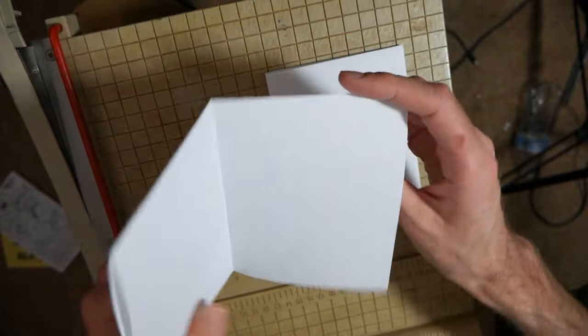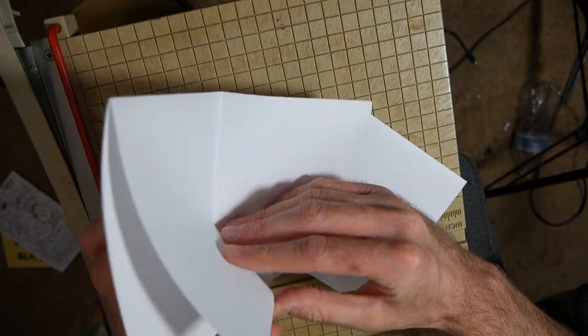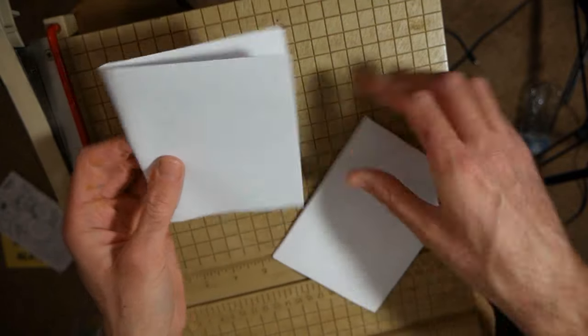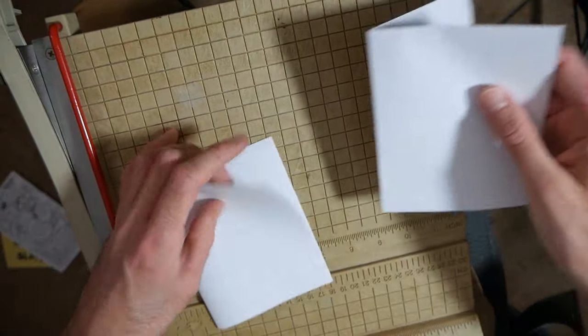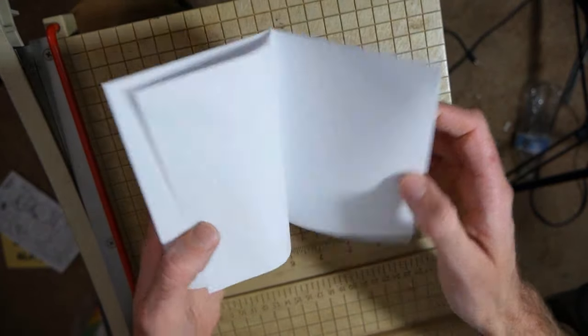Alright so now we've got two of these guys. What you're gonna want in the end product is a piece of paper folded this way. Got the openings at the bottom. Put them together. Eventually these would be stapled and we'll get to that later.